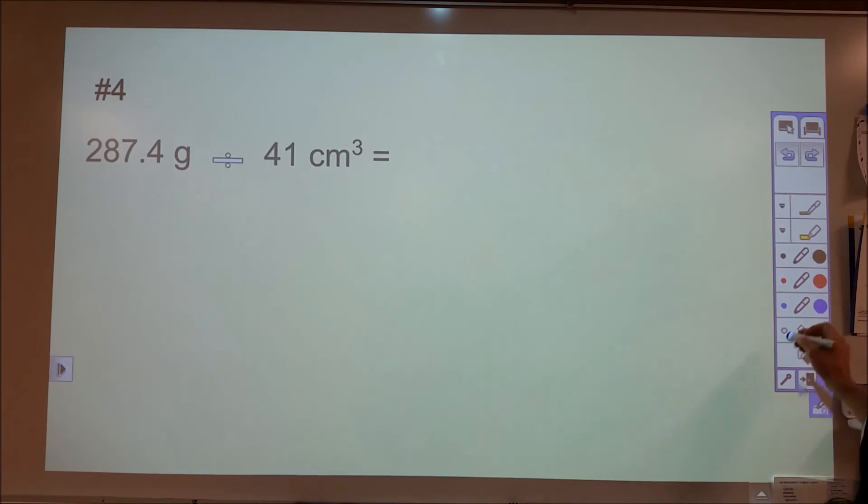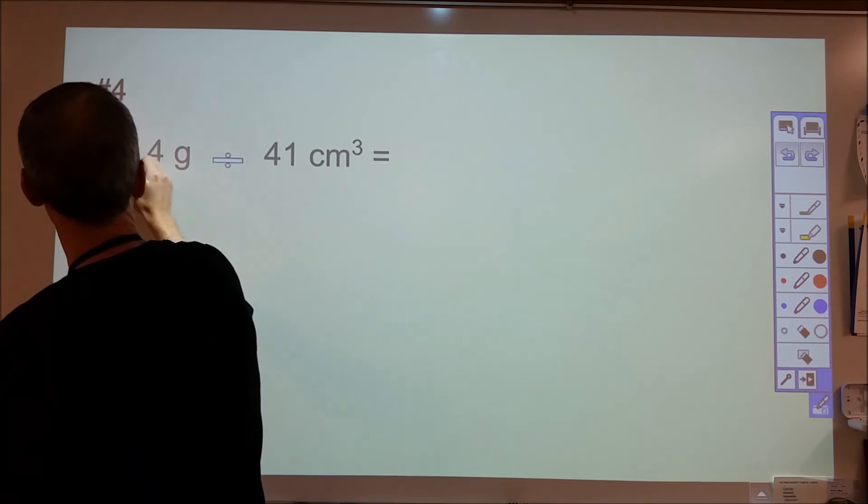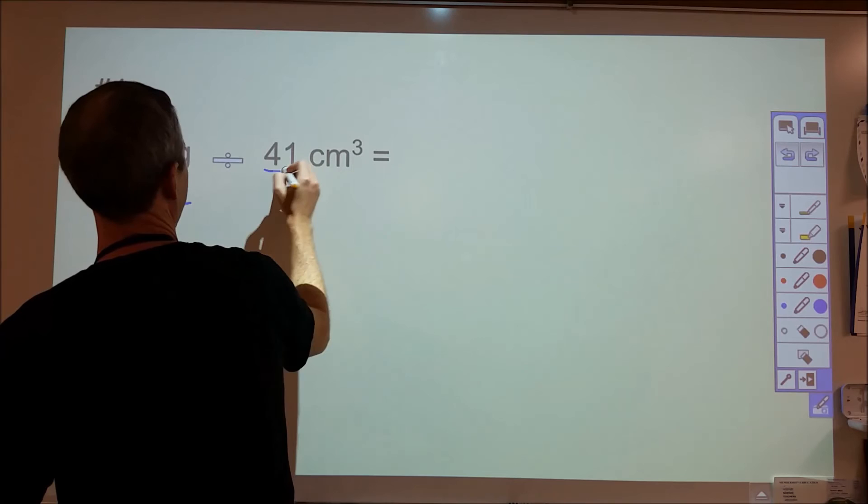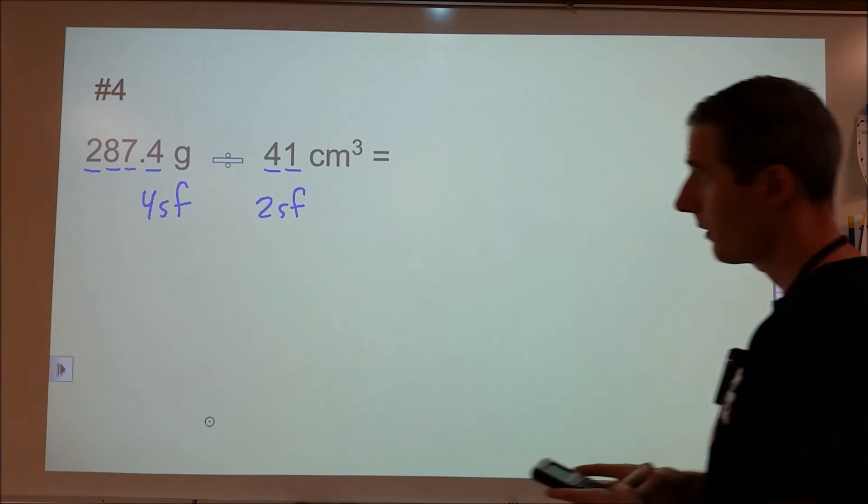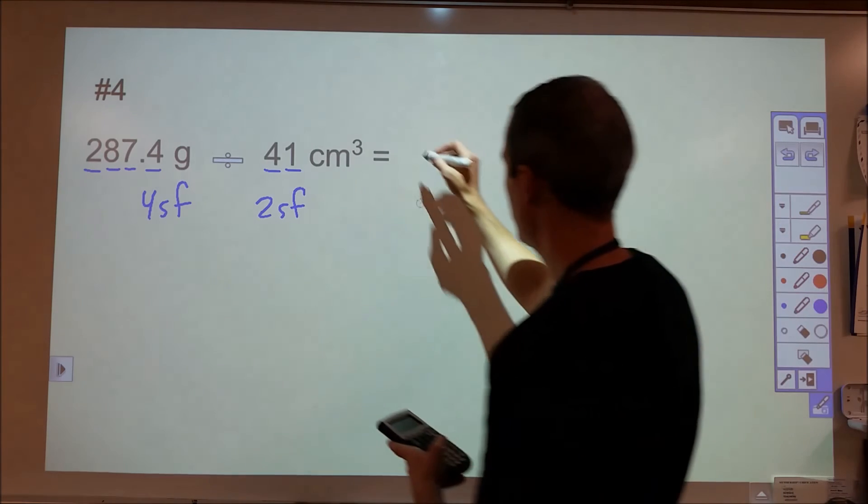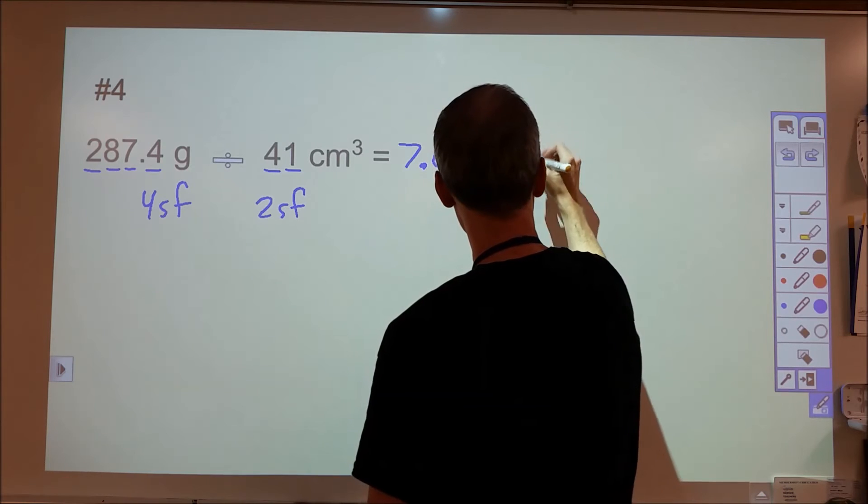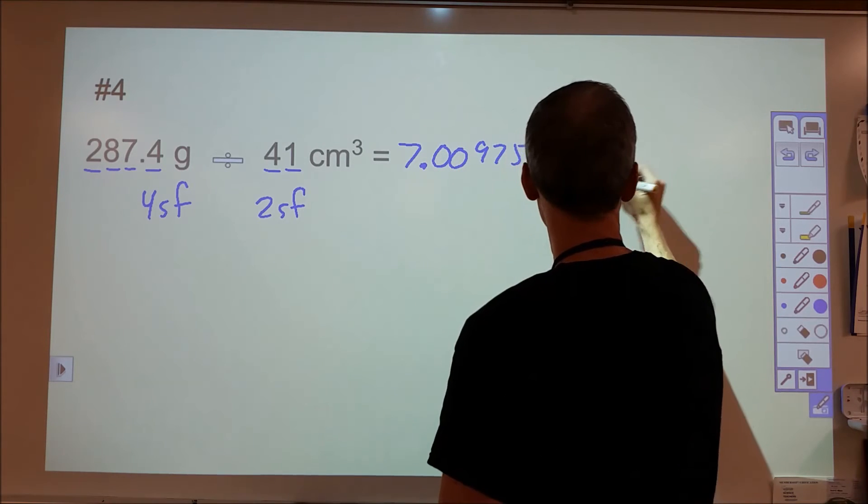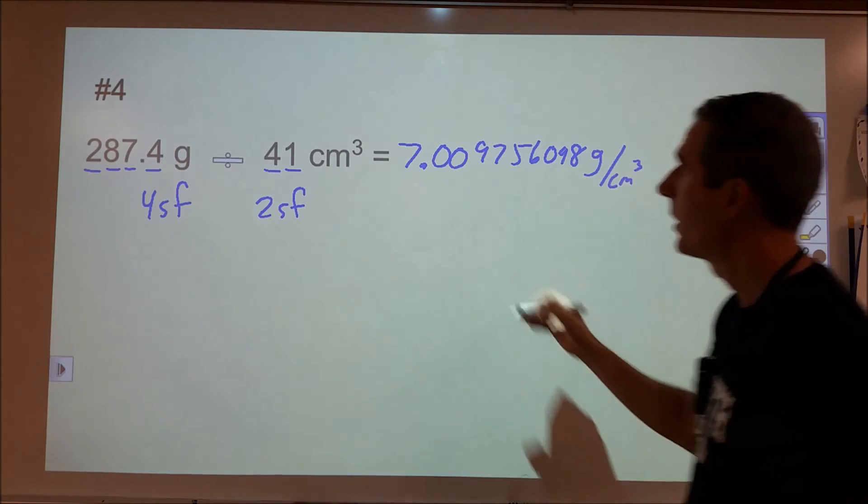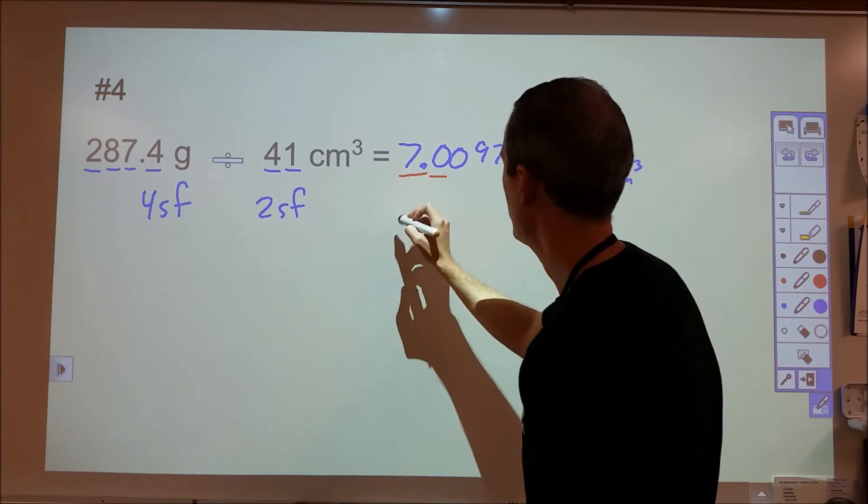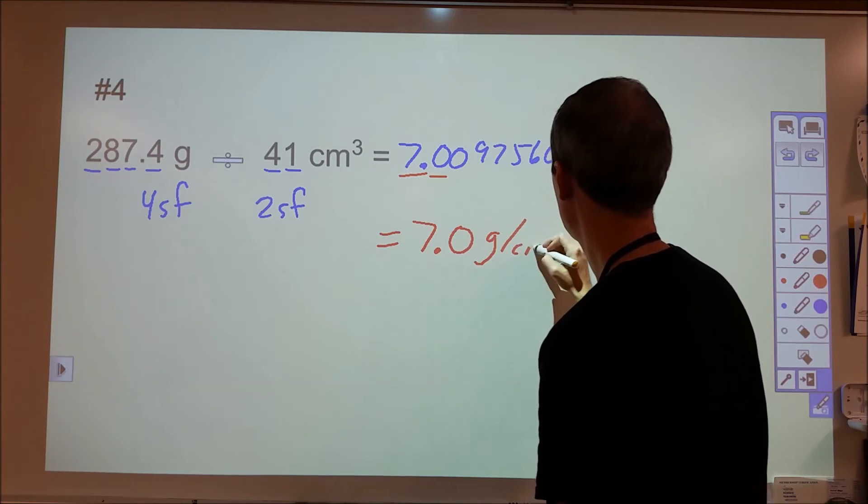Dividing goes by the same rules as we do for multiplying. So here we have four sig figs, here we have two sig figs. So 287.4 divided by 41 comes out to be 7.009756098 grams per centimeter cubed. And we want to round that to two sig figs. So we're going to change that to be 7.0 grams per centimeter cubed.